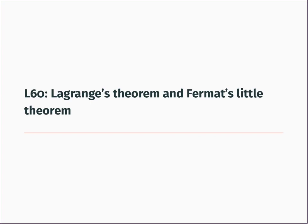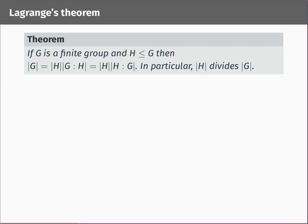In this final video of MATH0007, we're going to put together the ingredients from our last video on cosets to prove Lagrange's theorem and its corollary, Fermat's Little Theorem. Here's the statement of Lagrange's theorem: if G is a finite group and H is a subgroup of G, then the size of G is equal to the size of H times the number of left cosets of H in G.